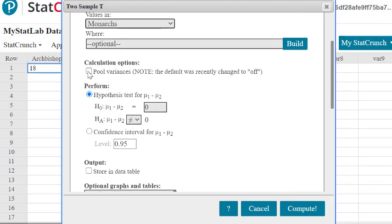We never really want to choose the pooled variances, so let's keep that off. And our hypothesis test is always going to be compared to zero for our Chapter 9 comparison between two samples. We also decided that the archbishops had less longevity than the monarchs, or at least that's what we're testing. And so we'll use the less than symbol.